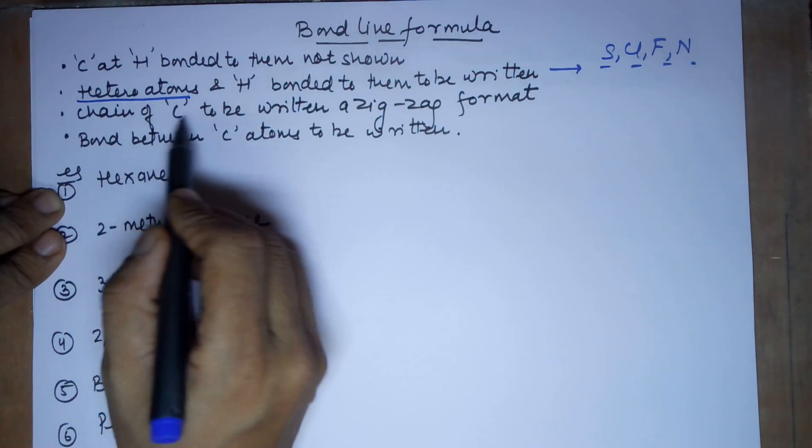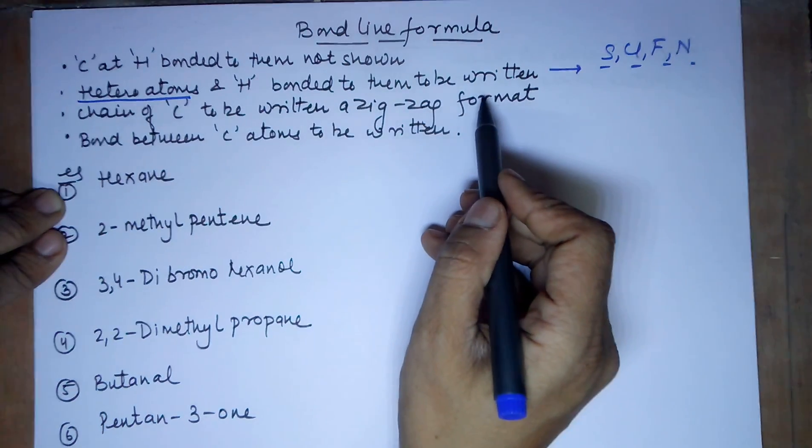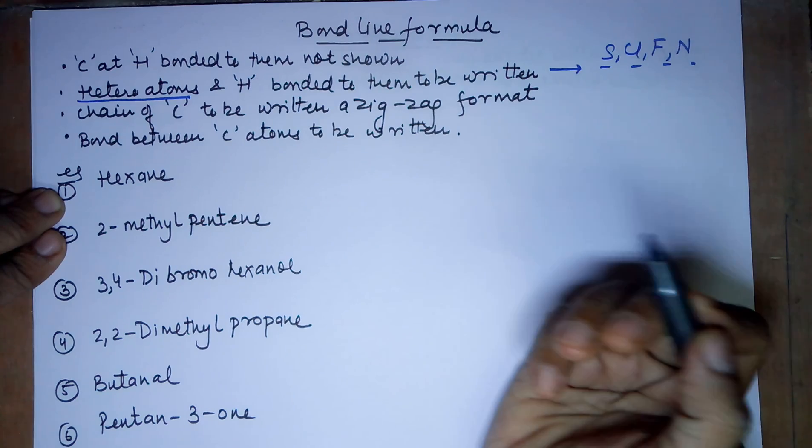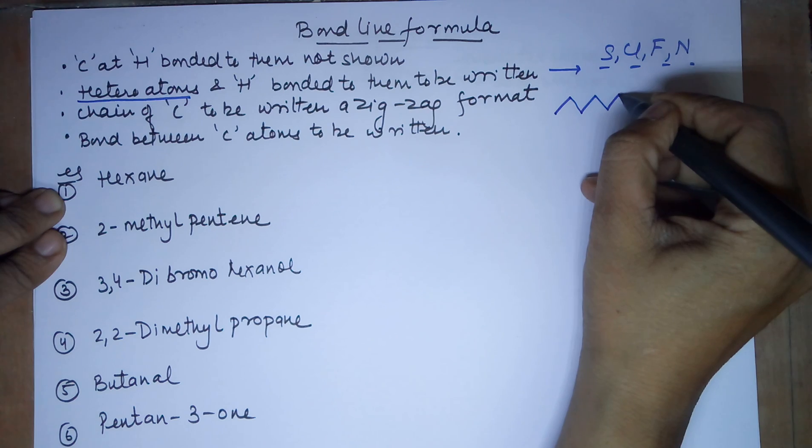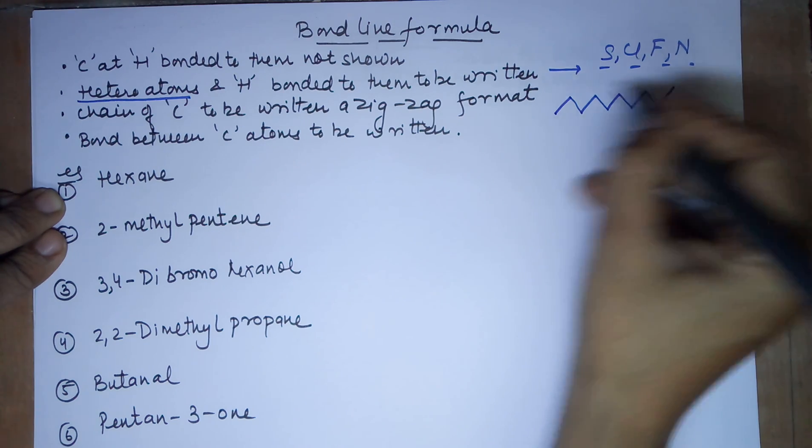Chain of carbons will always be written in a zigzag format. So, when you write 10 carbons, it would be something like 1, 2, 3, 4, 5, 6, 7, 8, 9 and 10.